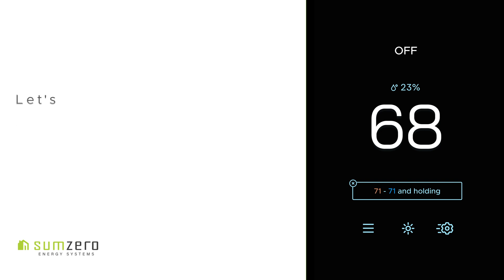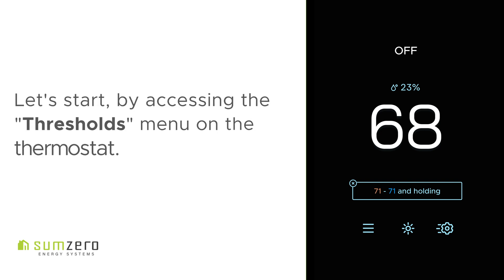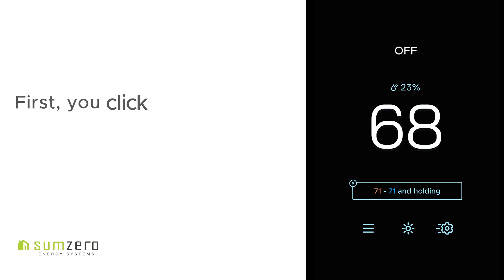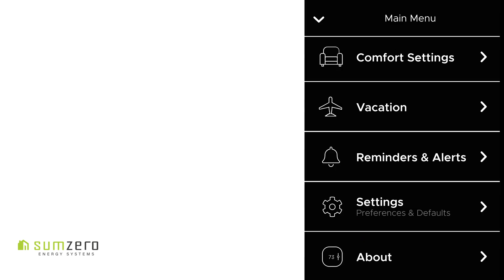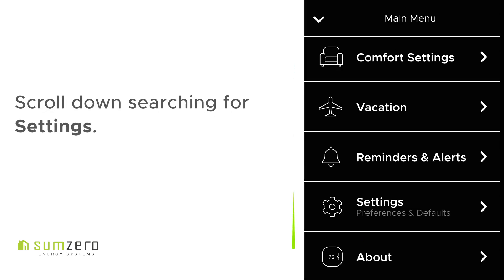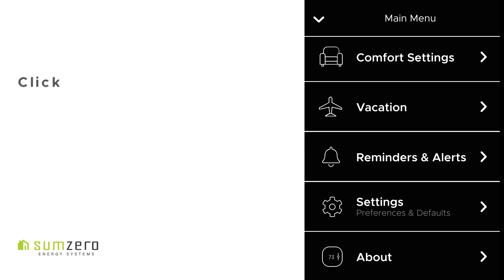Let's start by accessing the Thresholds menu on the thermostat. First, click on the main menu icon on your thermostat. Scroll down, searching for Settings. From here, let's start by clicking on Settings.